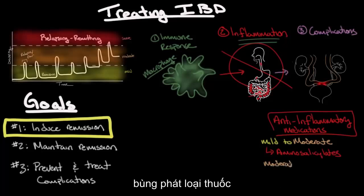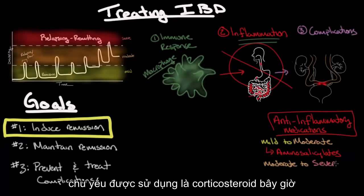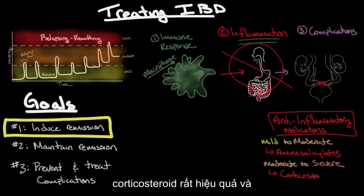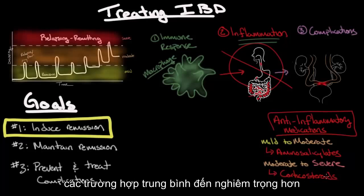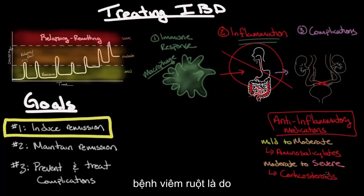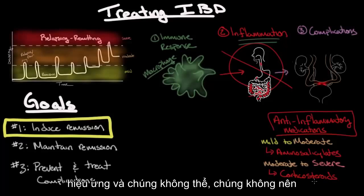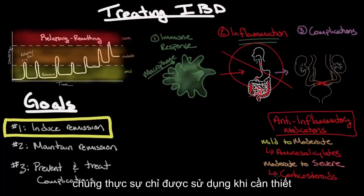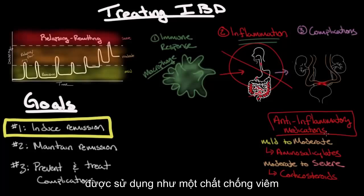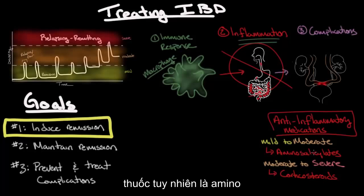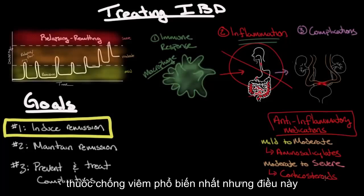For flares that are mild to moderate in severity, the primary anti-inflammatory medication used to induce remission is a group known as aminosalicylates. For moderate to severe flares, the primary medication used is corticosteroids. Corticosteroids are very effective and powerful anti-inflammatories, but they're reserved for more moderate to severe cases because they can have many side effects and shouldn't be taken for long periods of time. The aminosalicylates and corticosteroids are by far the most common anti-inflammatories.